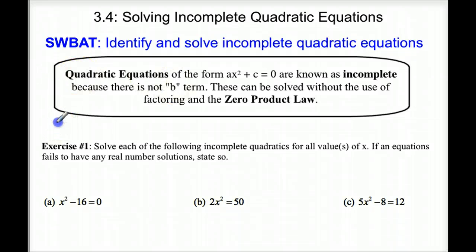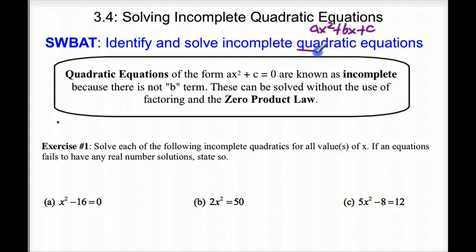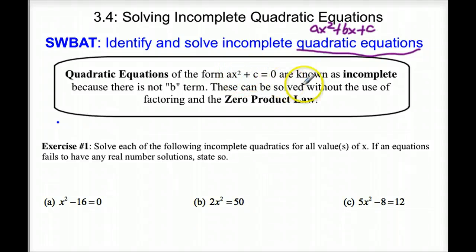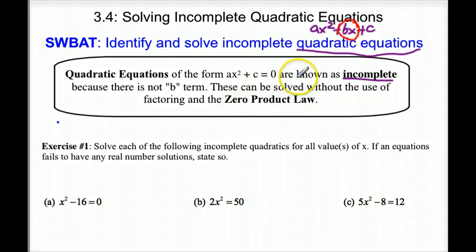As you can recall, a quadratic equation is anything in the form AX squared plus BX plus C. For an incomplete quadratic equation, the form is AX squared plus C equals 0. It's called incomplete because there is no B term. The way we solve such a quadratic equation is by using the zero product law.